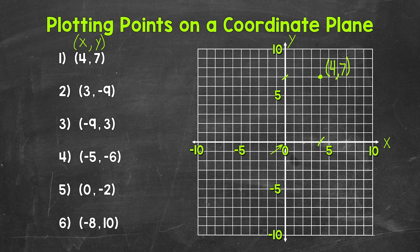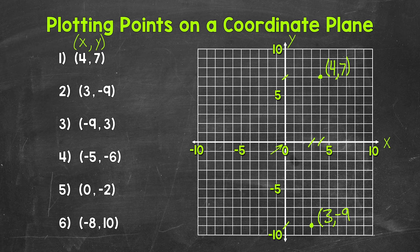Let's move on to number 2, where the x-coordinate is 3 and the y-coordinate is negative 9. So we start with the x-coordinate — over 3 on the x-axis, which is right here. And then we need to go down to negative 9, which is right here on the y-axis. So we plot this point right here, so this is 3, negative 9.